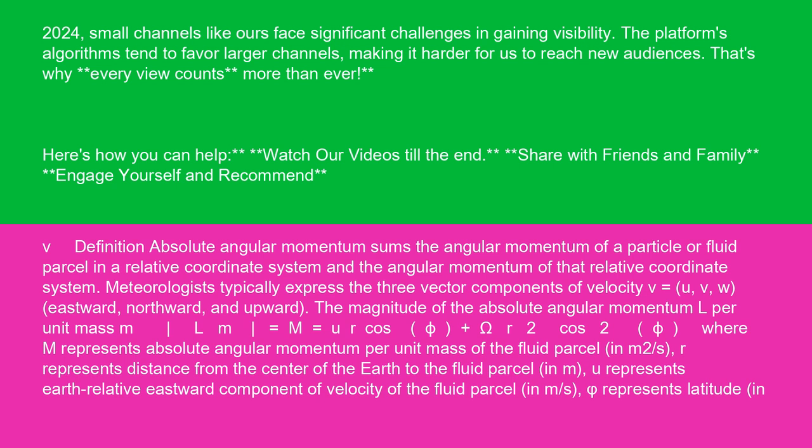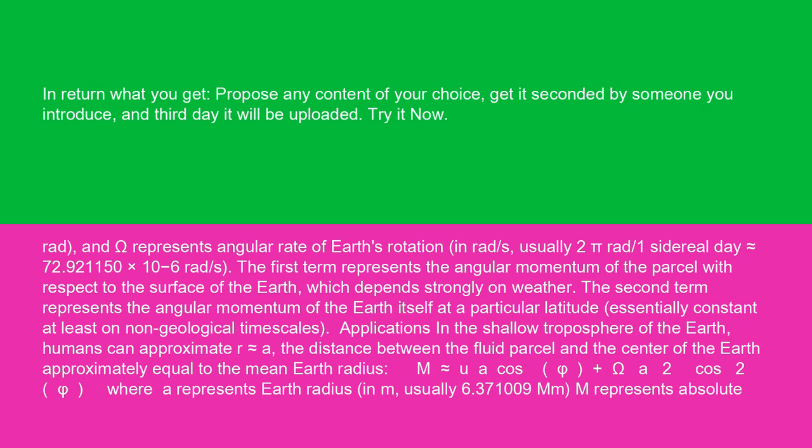Meteorologists typically express the three vector components of velocity V as U, V, W: eastward, northward, and upward. The magnitude of absolute angular momentum L per unit mass M equals: M = Ur·cos(φ) + ωr²·cos²(φ), where M represents absolute angular momentum per unit mass of the fluid parcel in m²/s; r represents distance from the center of the earth to the fluid parcel in m; U represents earth-relative eastward component of velocity in m/s; φ represents latitude in radians; and ω represents angular rate of earth's rotation in rad/s, usually 2π rad / 1 sidereal day ≈ 72.921150 × 10⁻⁶ rad/s.